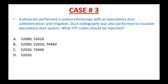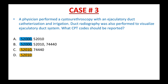Case number 3. Follow my tips and strategy — take a look at the answer choices and separate them into groups. A and B have the same code 52000, so they are in the same group. C and D have the same code 52010, so they are also in the same group. Now you know there are two codes to look up in your CPT book: 52000 and 52010. Please pause the video and do it now.